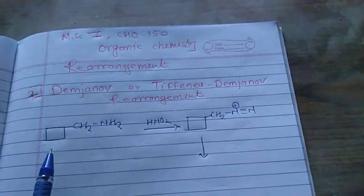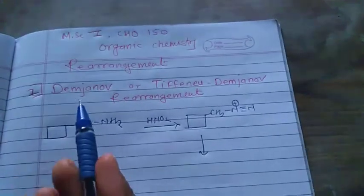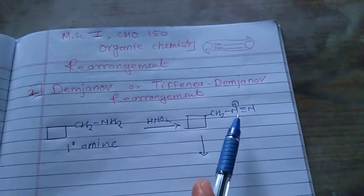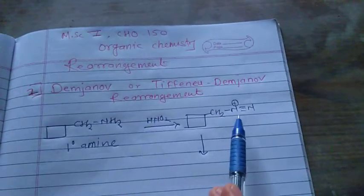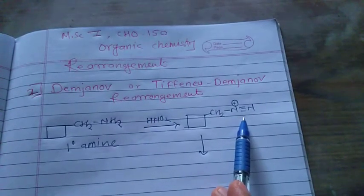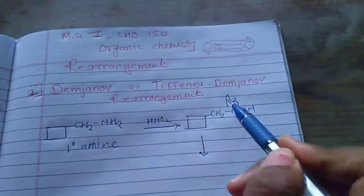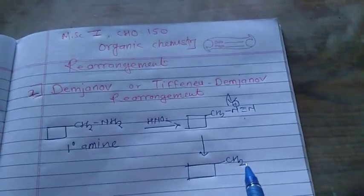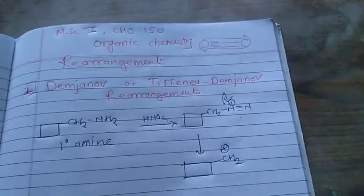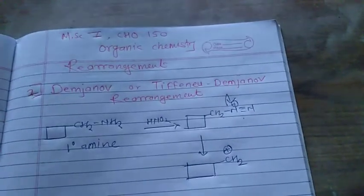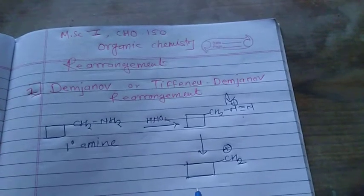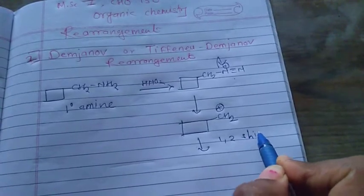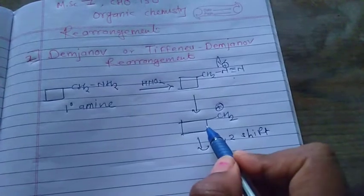In this reaction, this primary amine, on reaction with HNO2, that is nitrous acid, there is a formation of a diazonium compound. Then by removing this diazonium compound there is a formation of a carbocation — a CH2 carbocation. After formation of this, there is a 1,2 expansion or 1,2 shift migration that takes place.